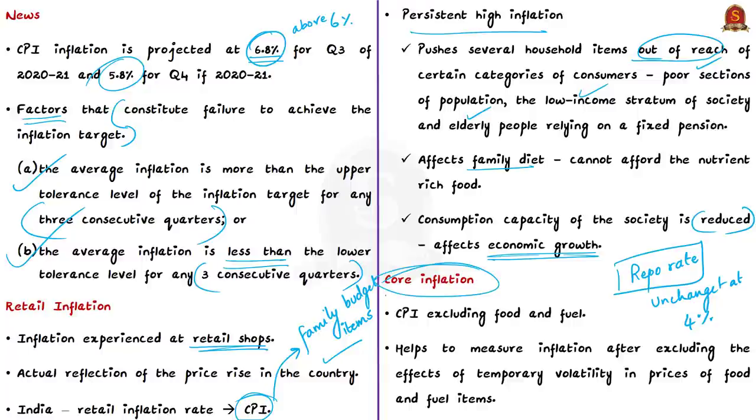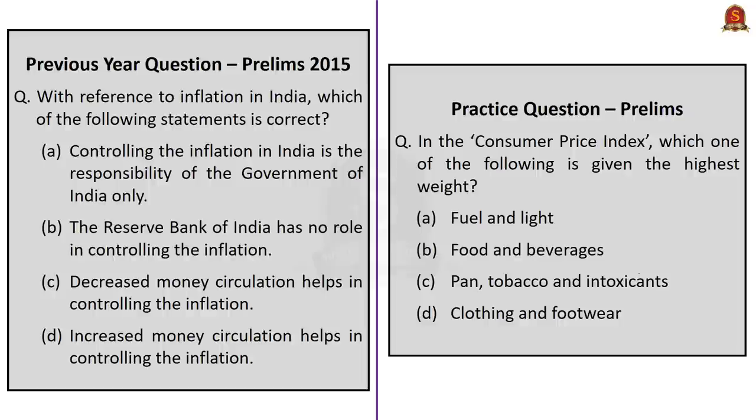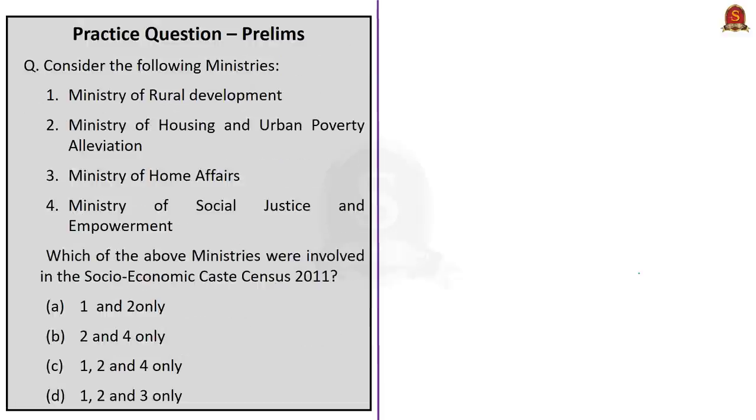Before projecting CPI inflation and before taking decisions on monetary tools to control inflation, RBI looks into the core inflation. What is core inflation? Core inflation is the CPI which excludes food and fuel. The prices of food and fuel change frequently, which makes it difficult to calculate the real inflation. Thus core inflation helps to measure the inflation after excluding the effects of temporary volatility in prices of food and fuel items. So in this discussion we saw what is inflation, what is CPI inflation, what are the components of CPI, how it is used by government and RBI for targeting inflation, the CPI inflation projection of RBI, and retail inflation and core inflation.